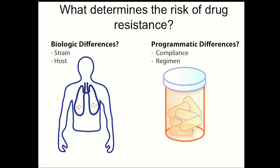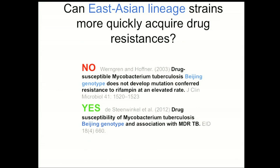Despite that, there is ample epidemiologic evidence, though sometimes conflicting epidemiologic evidence, that there are strain-based differences in the ability to acquire drug resistance — speaking specifically of the East Asian or Beijing lineages' more common association with drug resistance than other lineages. We sought to understand whether that is due to a programmatic difference in the distribution of those strains, or whether there are biologic differences. As microbiologists, we wanted to track down that biological hypothesis, so we turned to the literature.